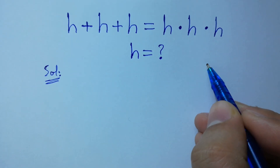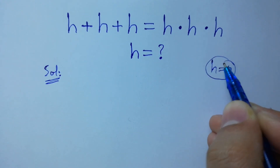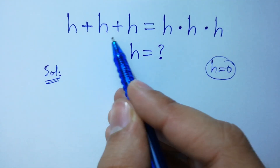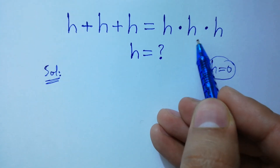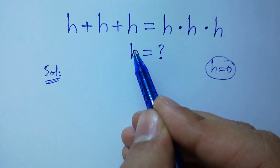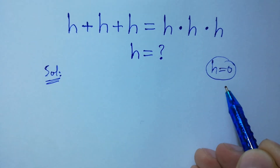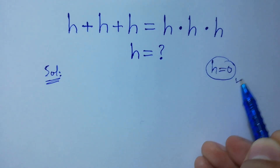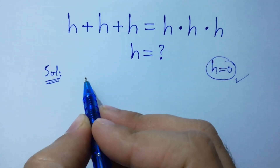If we put h equal to 0, we have 0 plus 0 plus 0 equal to 0 times 0 times 0, we get 0 equal to 0, which shows that the value of h is 0. But you should understand how h equals 0 — let's show this.